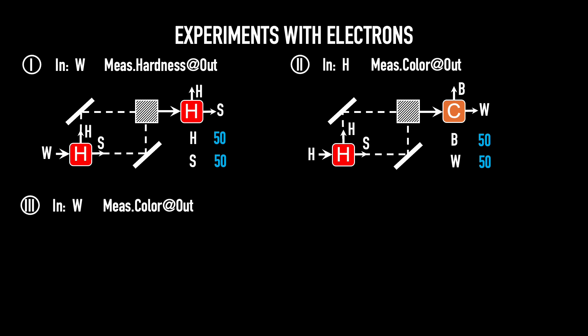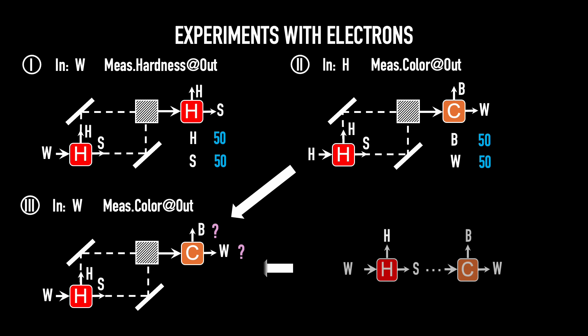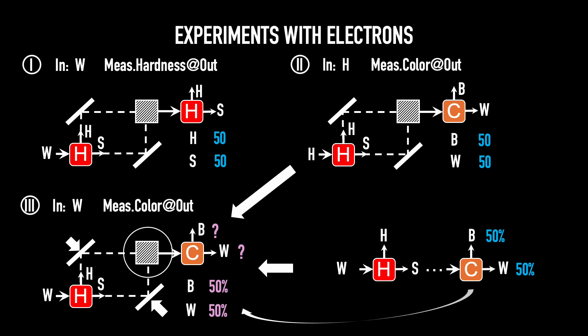Now, the third experiment. It has the same structure as the second. However, the input that comes in the hardness box is white instead of hard. And the question is the same. How many come out black and how many come out white? To make a prediction, let's review the experiment we've just discussed earlier. The structure is white into hardness box, color box, and the result is always 50% black, 50% white out. So if these mirrors do nothing, the two experiments are the same. It seems reasonable to predict 50% black and 50% white here. However, the experiment shows otherwise. It's always 100% white, 0% black. It's tremendously strange.